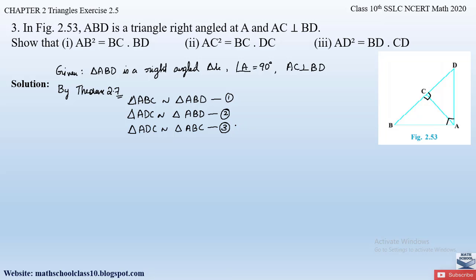Using these three equations, let us prove the three parts. The first part says: show that AB² = BC·BD. We look at the sides BC and BD — BC belongs to triangle ABC and BD belongs to triangle ABD. Since we already proved triangle ABC ~ triangle ABD in equation 1 by theorem 2.7, we will take the ratio of corresponding sides of these two triangles.